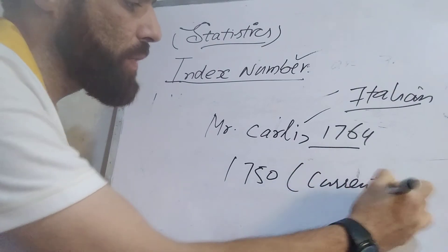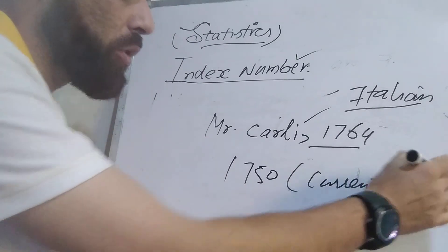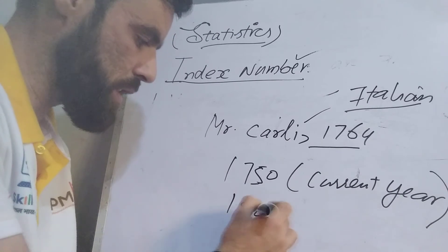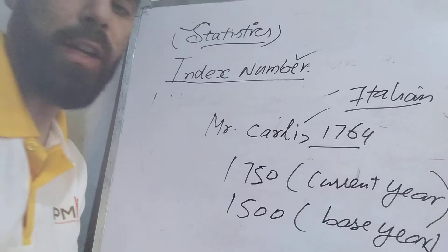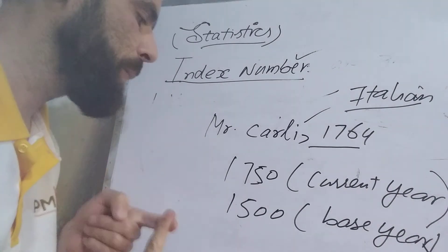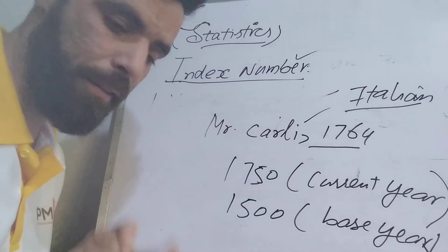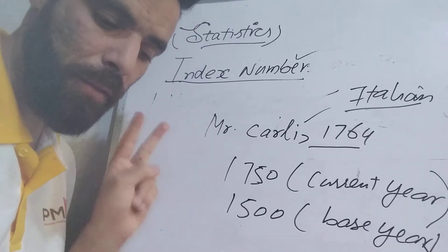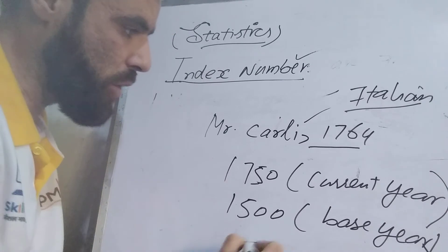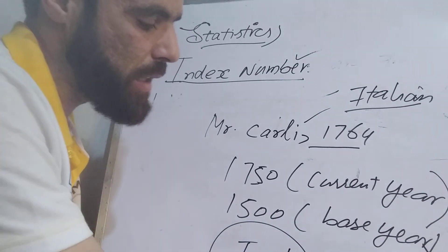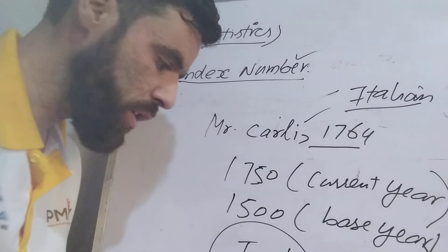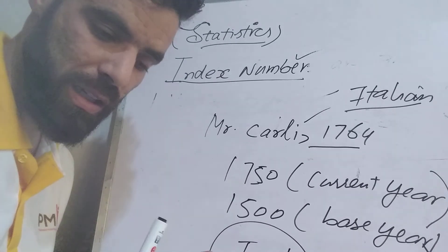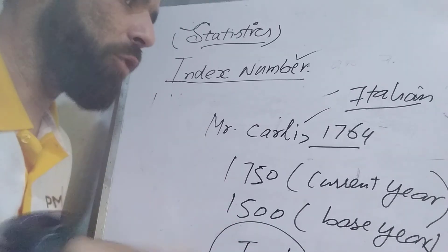Carli's index compared the price levels of 1500 as the base year and 1750 as the current year, constructed in 1764. He wanted to study the effect of the discovery of America on the price level in Italy. You know, even today with globalization, any change in one part of the globe has an effect on other places.